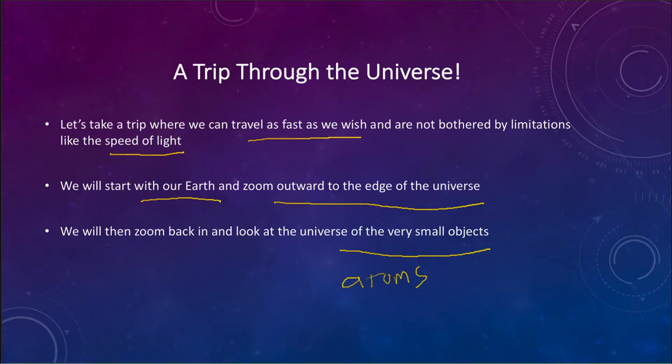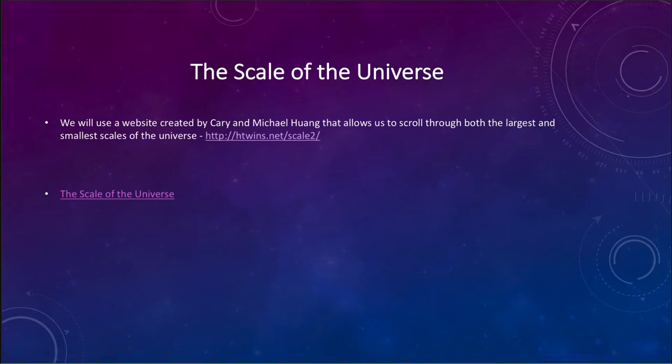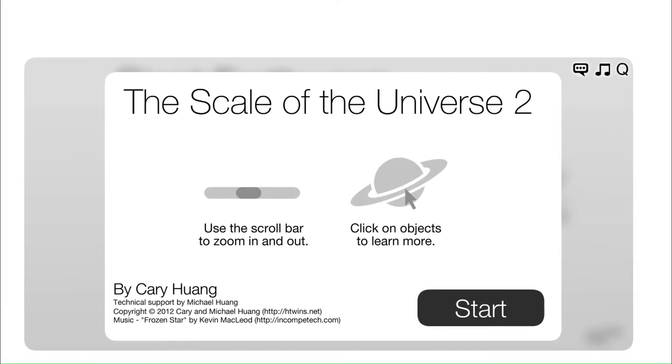So a number of different things and what we're going to use here is a website that kind of does this for us and lets us help zoom through this all. And what we'll do is the website is linked to here and this is by Kerry and Michael Huang and it allows us to scroll through these different sizes. So let's take a look at their website on the scale of the universe and see some of the things that we need to see for an astronomy course. So as we start we'll see the website like this, the scale of the universe, and we'll be able to scroll in and out through things as we begin this tour.